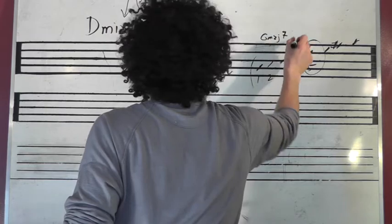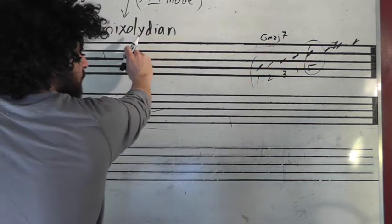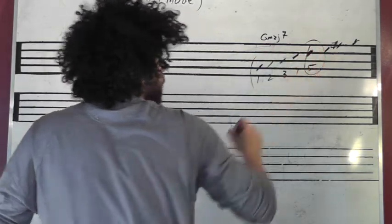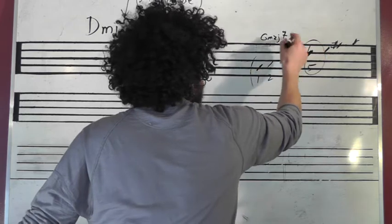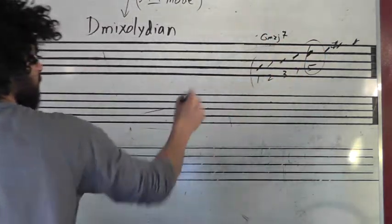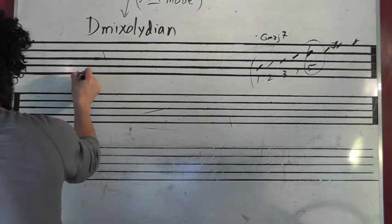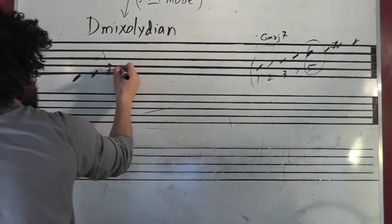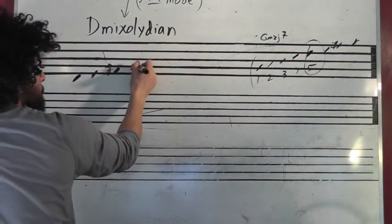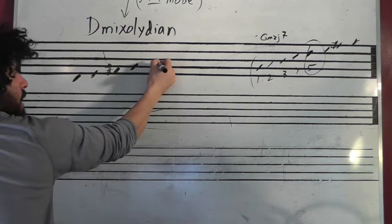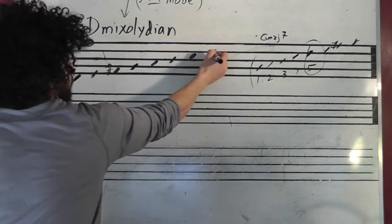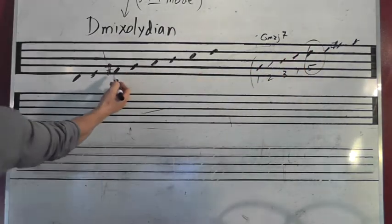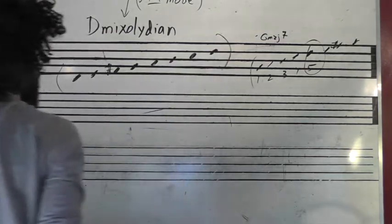But what we want to know is the D mixolydian scale. So we're starting from D here, continuing diatonic to the key of G. We'll start at D down here, and then E, F sharp, G, A, B, C, and D. See that? So there's one sharp - there it is - and that is our D mixolydian scale.